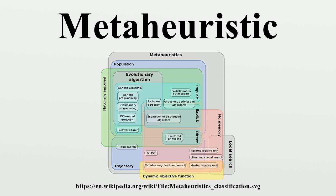Ant colony optimization, particle swarm optimization, social cognitive optimization, and artificial bee-colony algorithms are examples of the swarm intelligence category. A hybrid meta-heuristic is one which combines a meta-heuristic with other optimization approaches, such as algorithms from mathematical programming, constraint programming, and machine learning. Both components of a hybrid meta-heuristic may run concurrently and exchange information to guide the search. On the other hand, memetic algorithms represent the synergy of evolutionary or any population-based approach with separate individual learning or local improvement procedures. An example of a memetic algorithm is the use of a local search algorithm instead of a basic mutation operator in evolutionary algorithms.